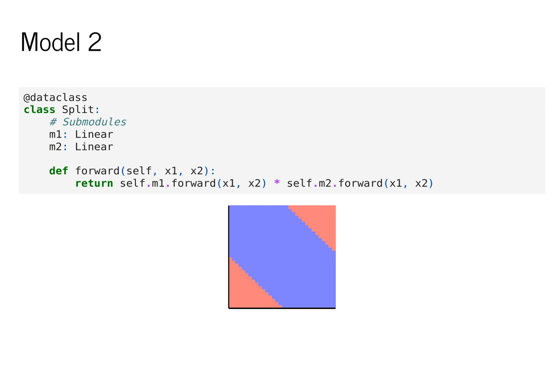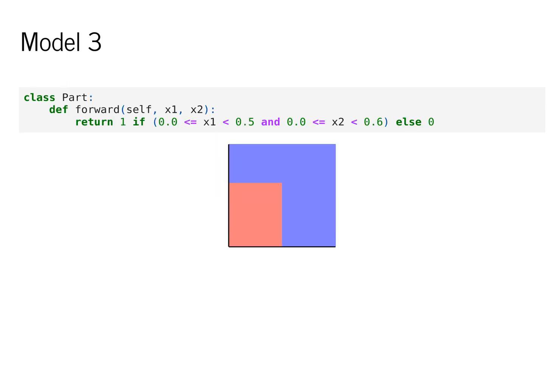We'll discuss these sort of models later in the class, but for now, I just want to emphasize that where the red and blue parts of this graph are are dependent on the definition of the model function. To emphasize this point, let's look at one more model, which we'll call part.